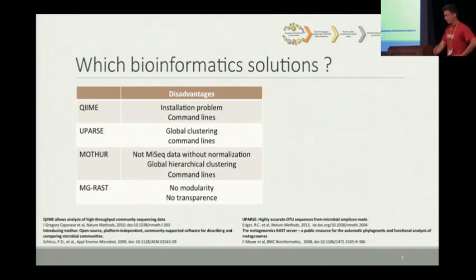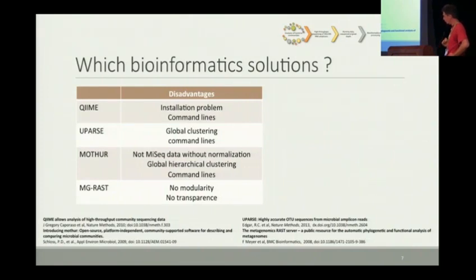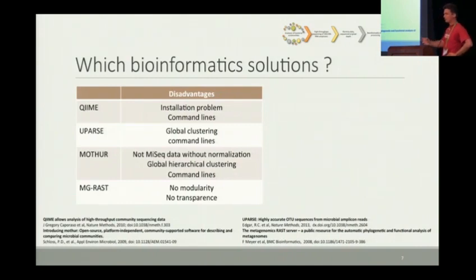As mentioned before, there are existing bioinformatics solutions, for example QIIME, which is well-known, as well as mothur and MG-RAST. The problems are, first of all, that these are mainly command-line tools, so for biologists it's not really easy to use. Moreover, we can have problems installing these tools, in particular when you have a lot of different dependencies, and there are some tools that are quite difficult to install and use.